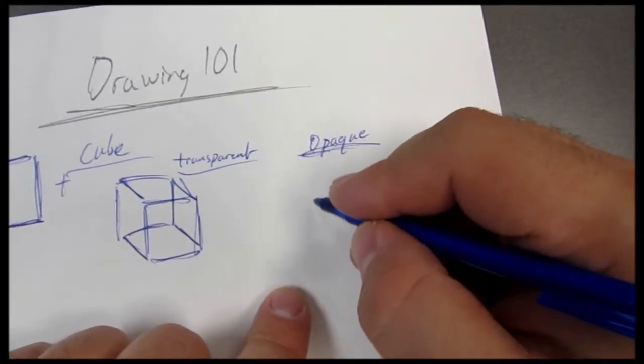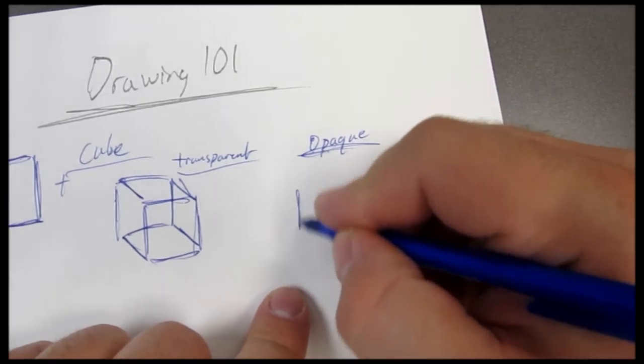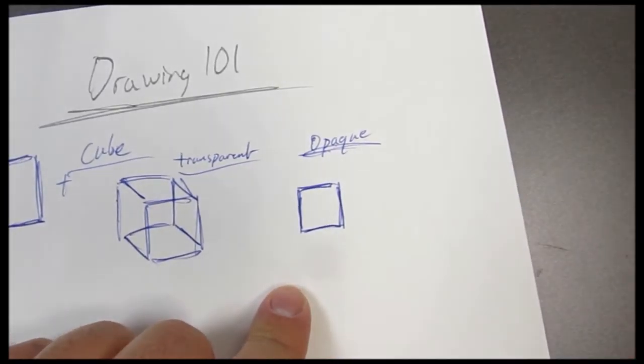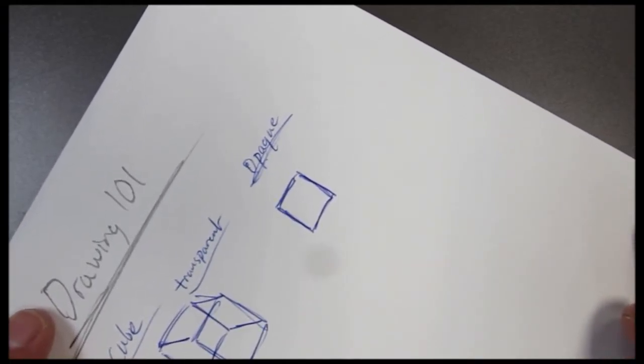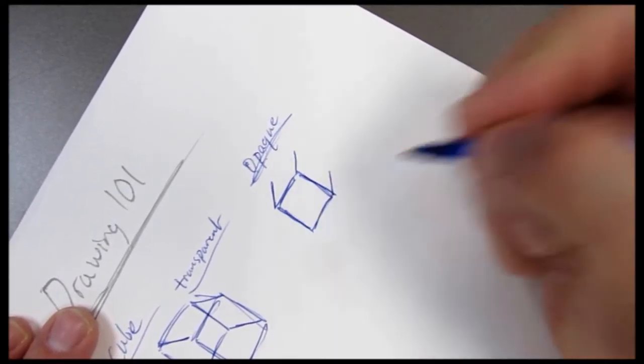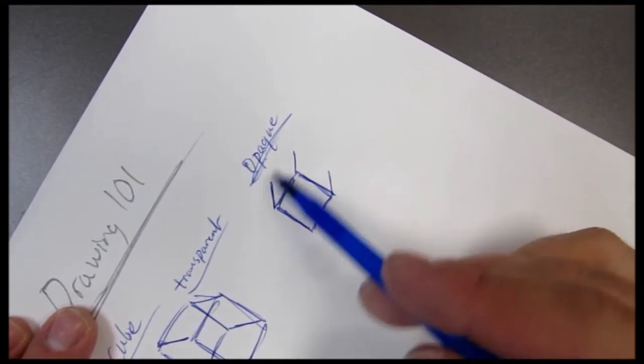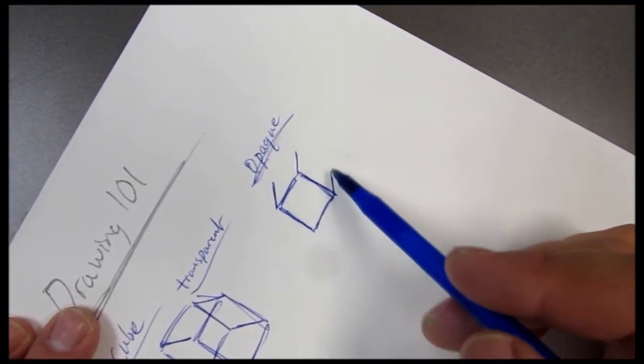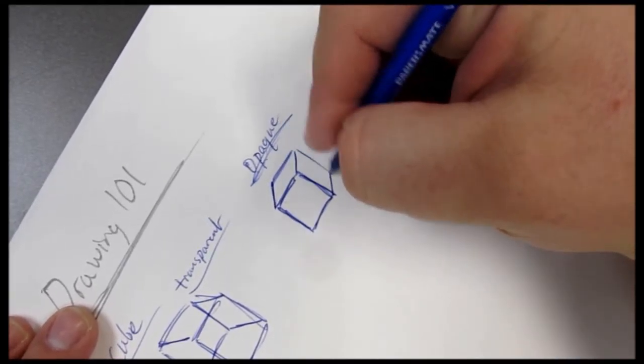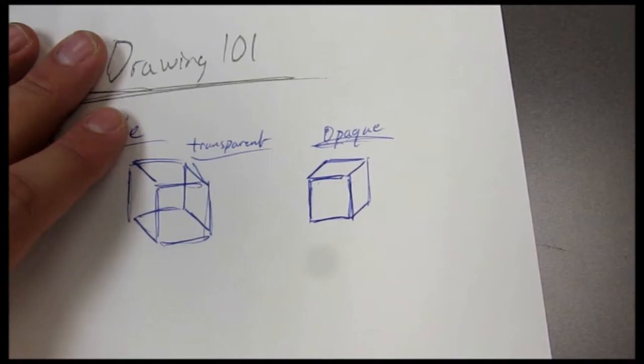Now for the opaque cube, we have a couple of ways we can do this. The easiest way by far that I think is where you take the square, you rotate your paper. Number one, number one, number one. Again, say that so that your brain has that predetermined notion of how long that line should be. Cap it off. One. Two. There's your cube.